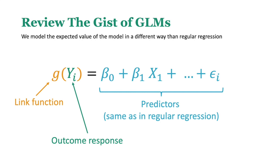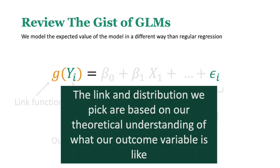The predictors we're going to be using just like we do in regular regression. The only thing that's going to change is how we interpret the coefficients. What's important with understanding all these GLMs is that the link and distribution we pick are based on our theoretical understanding of what our outcome variable is like. We can aid our theoretical understanding by looking at distributions, but ultimately we need to pick it based on what we believe this variable really is like out there in the wild.